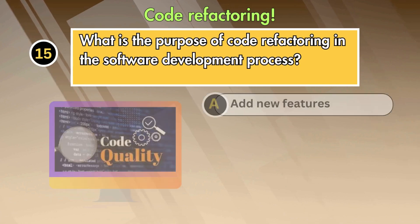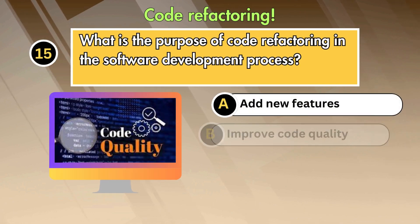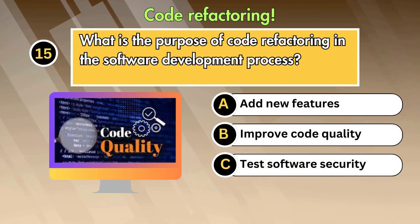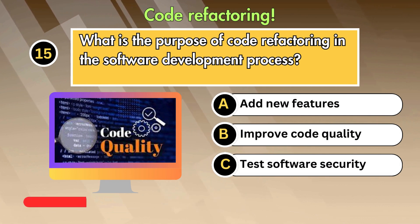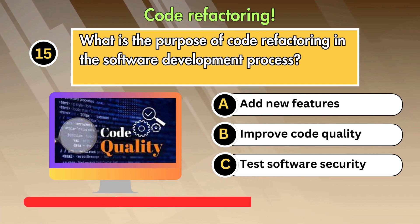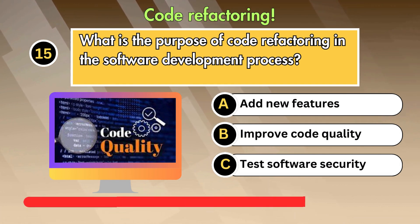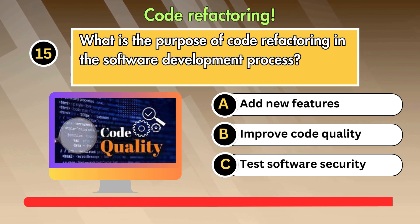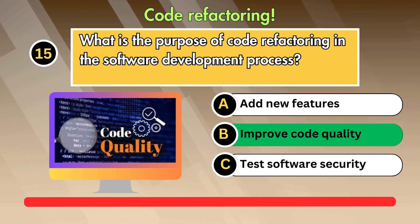Question 15: What is the purpose of code refactoring in the software development process? Option 1: Add new features. Option 2: Improve code quality. Option 3: Test software security. Answer is: Improve code quality.